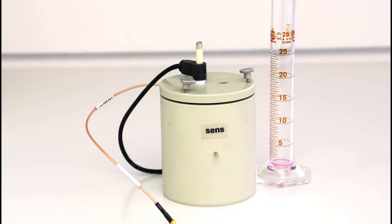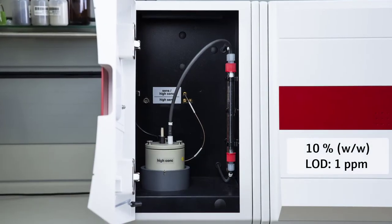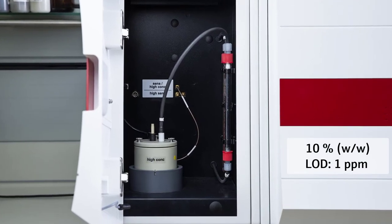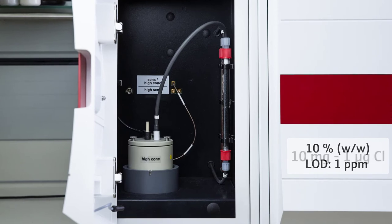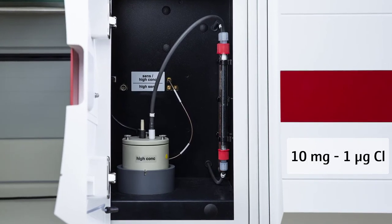In combination with the optional internal splitting, the upper limit is around 10 mass percent of chlorine, and the LOD is 1 ppm. All with respect to the specific mass. The absolute range is from 10 mg to 1 µg chlorine.